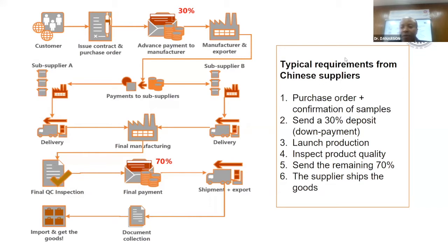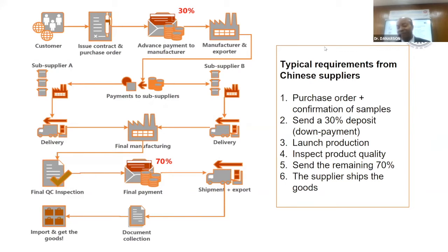So those are the typical requirements from Chinese suppliers. You need to know this as a reference. If a supplier asks for 30% and you think they are too demanding, that's the wrong approach — you will lose their confidence and trust. But knowing this standard, if they ask for 40%, you can confidently say you'll only pay 30%.